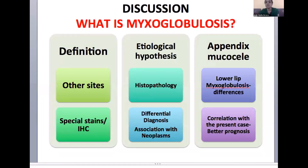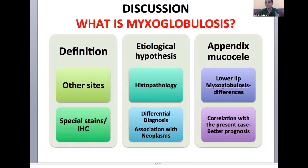Coming to the main part of my discussion — what is myxoglobulosis? Myxoglobulosis is defined as an organized collection of mucin with an eosinophilic or laminated amorphous cord. Multiple etiologic hypotheses have been suggested: the most important ones being a bacterial or epithelial debris acting as a nidus for mucin deposition, or an exuberant reparative process by the granulation tissue for whatever mucin has been extravasated into the connective tissue, or a localized change in the microenvironment. This type of myxoglobulosis is very common in the appendix because of obstruction of the proximal appendiceal duct. Other sites include the lower lip and the laryngeal mucosa. Histopathologically, it is the same — organized collection of lumens showing a concentric pattern. In the lower lip, myxoglobulosis presents with the same histopathology, but the only difference is the globules are smaller in size, with no calcific deposits and no cholesterol clefts.